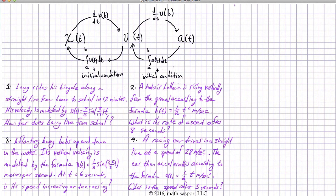Let's just walk through these. So you have someone riding a bicycle, going to school. It takes them 12 minutes to get to school and we have their velocity. So the question is, how far away does this person live from school?